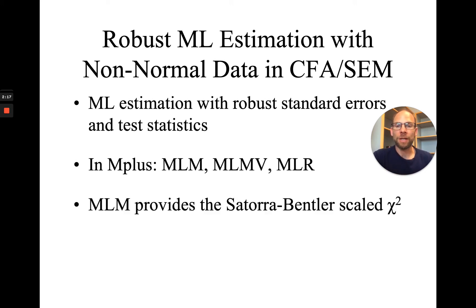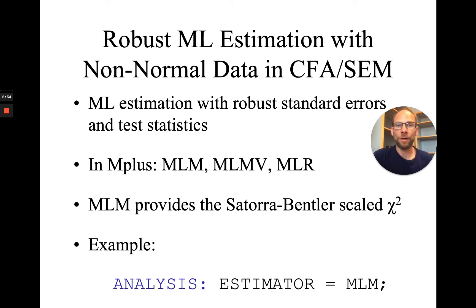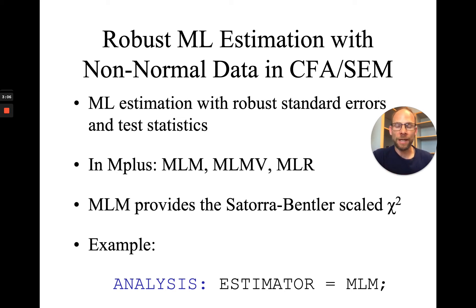The MLM estimation method provides the so-called Satorra-Bentler scaled chi-square statistic, which has been shown to work well for making an adjustment to the chi-square for non-normality. It's easy to specify — in your Mplus input file you would write: analysis, estimator equals, and then the type of robust estimator you like, instead of choosing regular ML, which is the default in Mplus for continuous outcome variables. You get the same parameter estimates, but your test statistics and standard errors will be different.